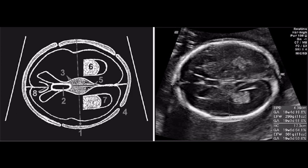Through fetal ultrasound, measuring biparietal diameter is extremely important because it can show fetal development, including indicating weight, gestational age, brain health status, the baby's development, and the detection of fetal abnormalities.